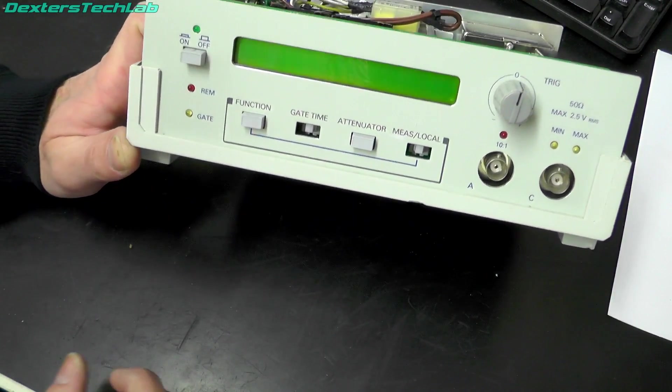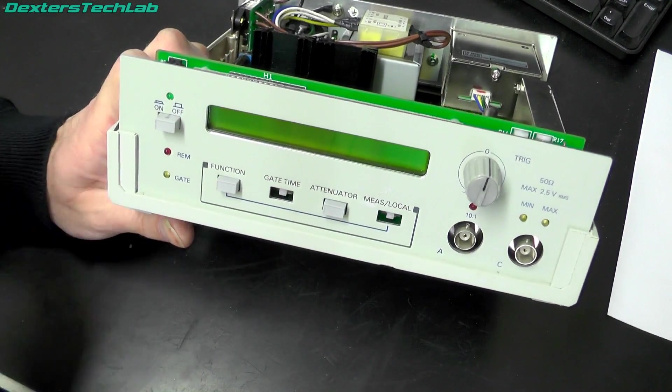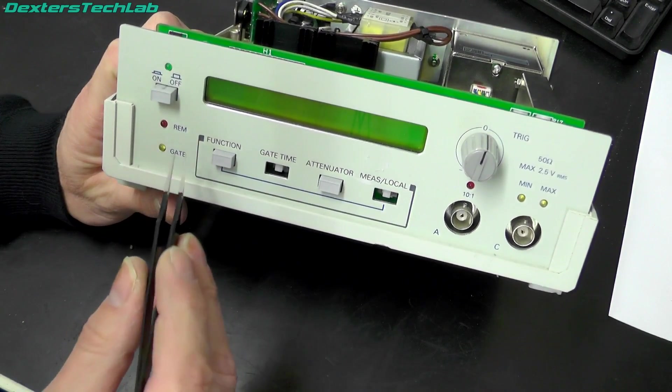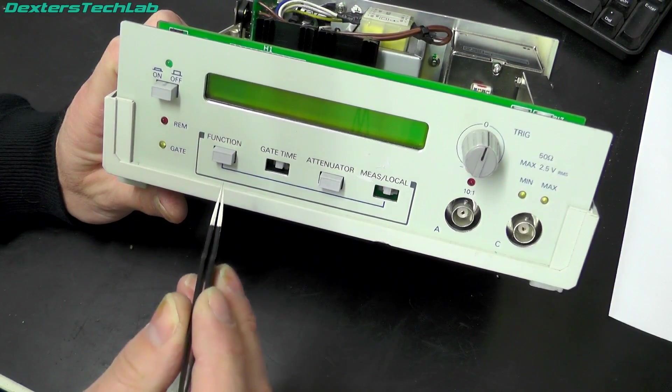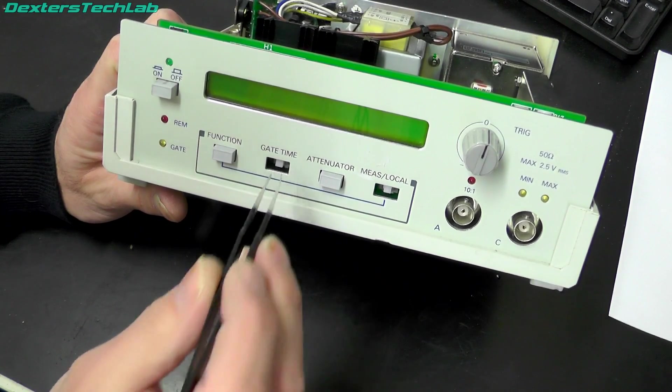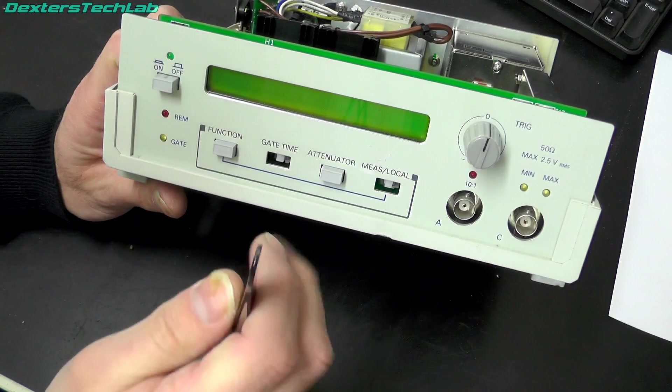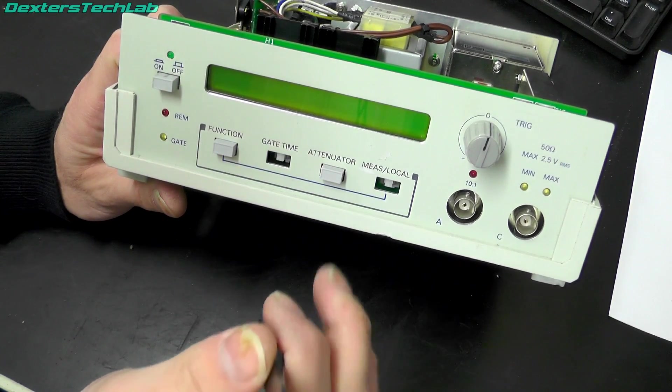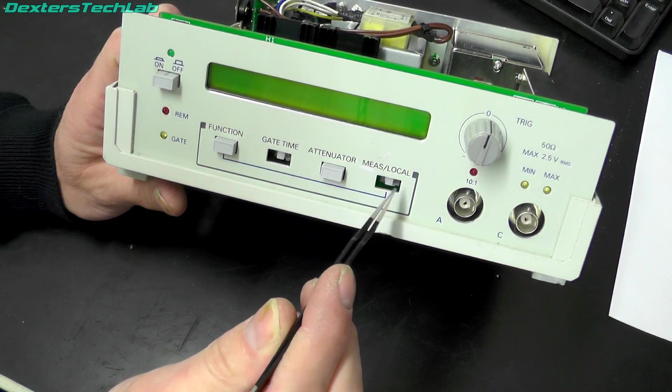Right, so if we take a look at the front panel. We've got the on off switch. Rem indicator, gate function button. Gate time button. That's missing its key top. We've got an attenuator switch. And MES at slash local.